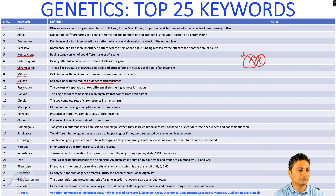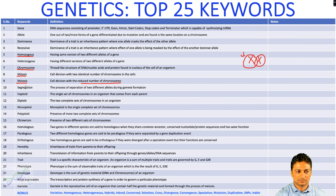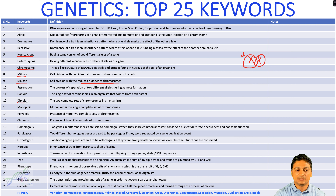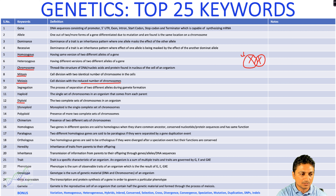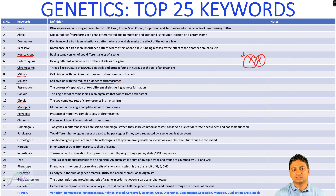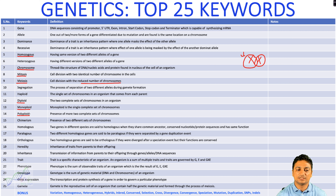The tenth keyword is segregation — the process of separation of two different alleles during the formation of the gamete. Haploid is a single set of chromosomes in an organism that comes from its parent. Diploid is two complete sets of chromosomes, one from the male parent and one from the female parent. Monoploid is a single complete set of chromosomes, while polyploid means the presence of two or more complete sets of chromosomes.